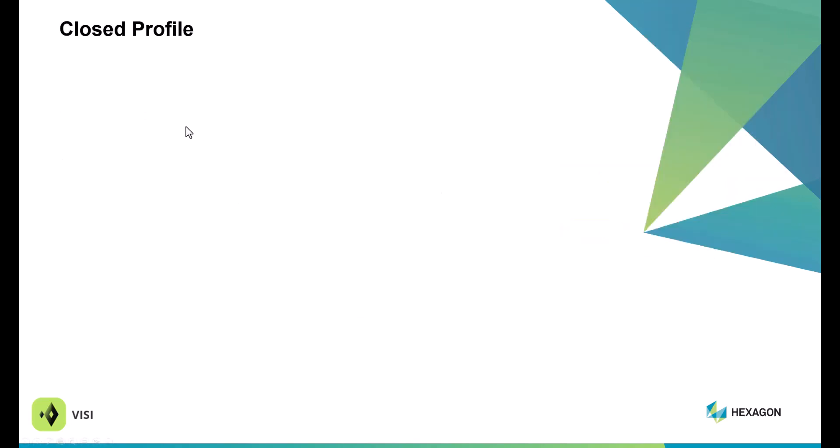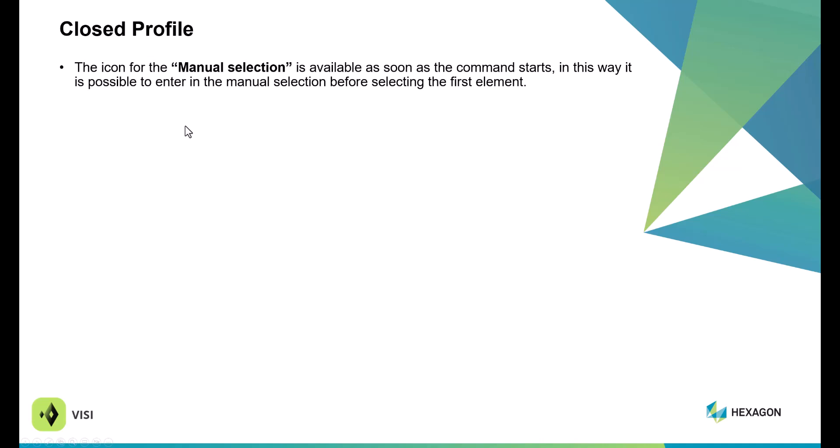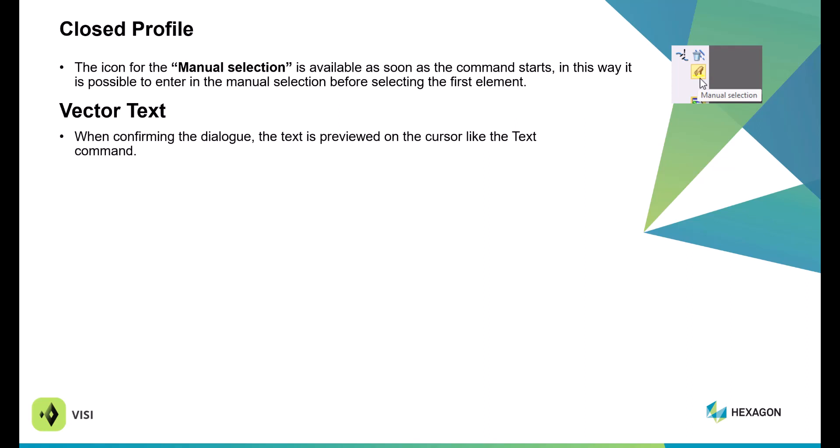Within Close Profile, the icon manual selection is available right at the start of the command, allowing manual selection before selecting a first element. There have also been improvements with vector text: when inserting text, you can now preview the text as you do an insertion. Previously you just picked a point and then saw the text; now you see the preview, which is very nice.